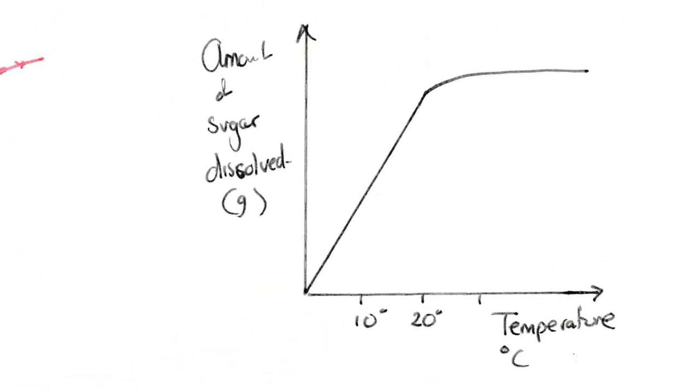Right, let's practice these skills then, folks. How are you going to pick up three marks from this table? Here's the answer. As you increase the temperature, the amount of sugar dissolved increases. One mark. You could say that it increases more rapidly between 0 degrees and 20 degrees, where it shows a linear correlation and it is directly proportional. But after 20 degrees, it changes. There's the second and third marks.